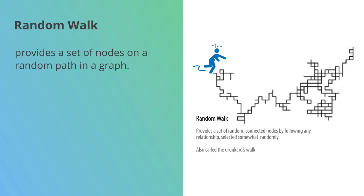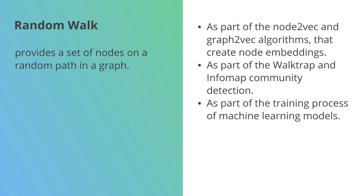This one is usually used as part of other algorithms. There are a couple of graph embedding algorithms that make use of random walks and community detection algorithms as well, and it's also been used as part of machine learning models.